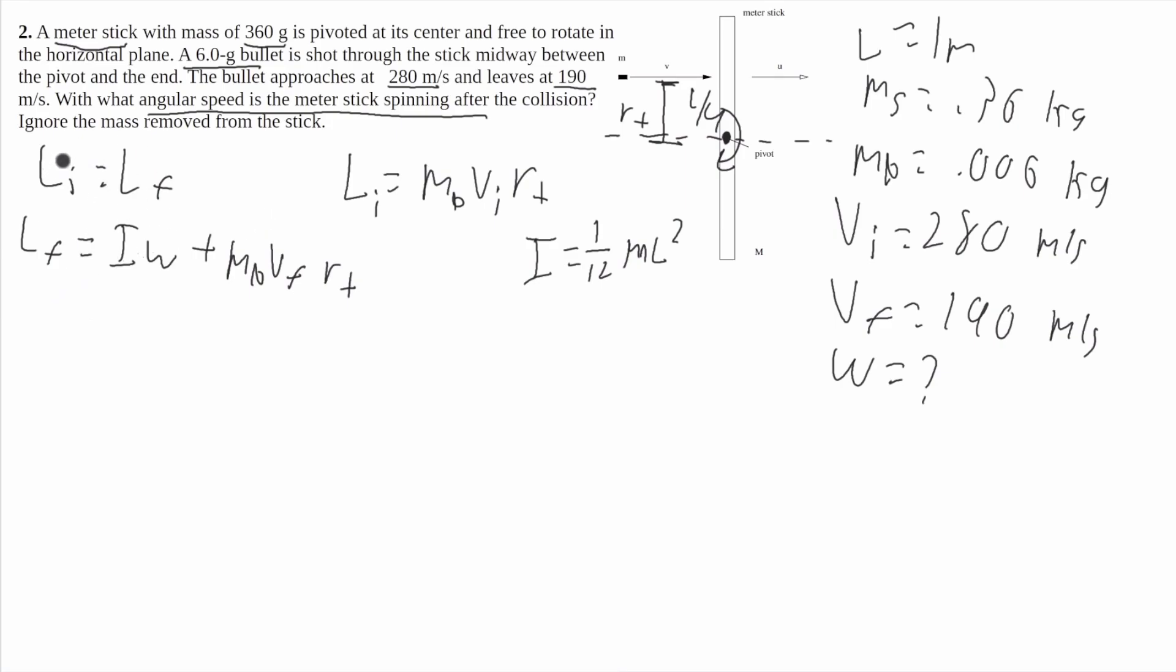So I want to say that the initial angular momentum is going to be equal to the final angular momentum. So it'll be mb v i r perpendicular is equal to i omega plus mb v final r perpendicular. Since we're solving for omega, I want to get omega by itself on one side by subtracting this term to both sides, and we'll get i omega is going to be equal to mb v initial r perpendicular minus mb v final r perpendicular.